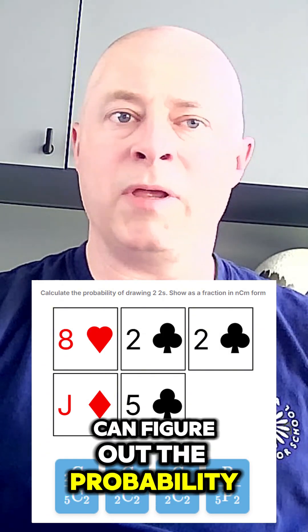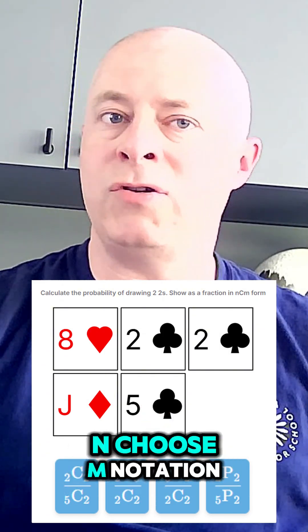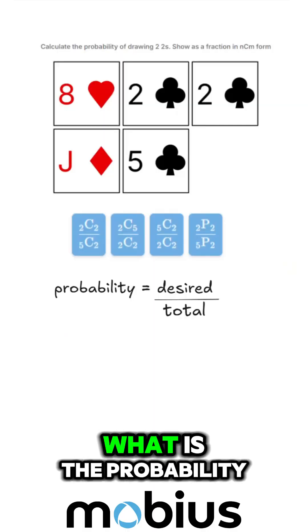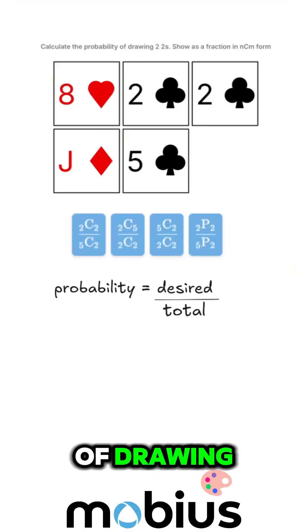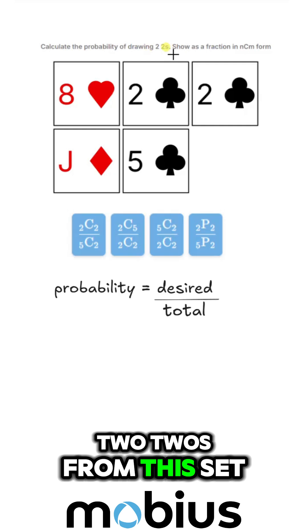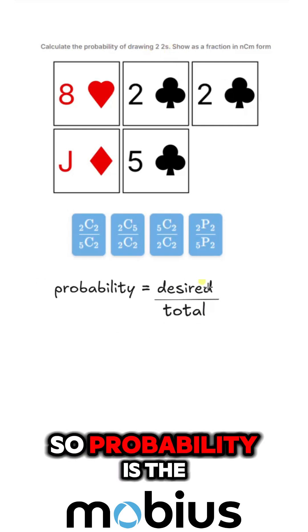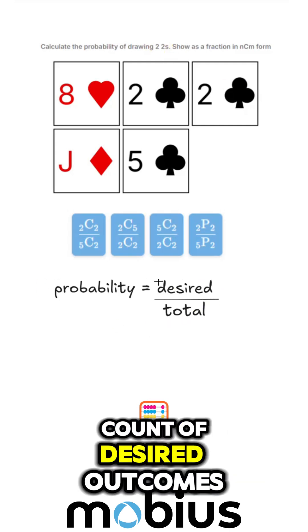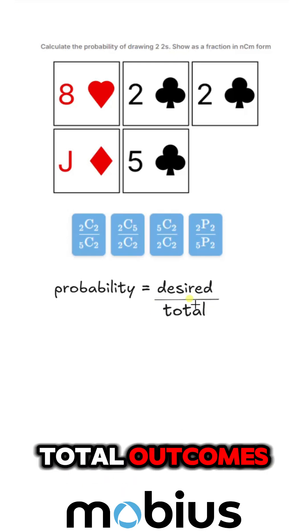Let's see if we can figure out the probability of drawing cards using n choose m notation. What is the probability of drawing two twos from this set of cards? So probability is the count of desired outcomes divided by the count of total outcomes.